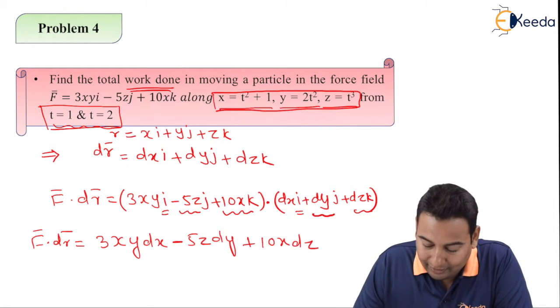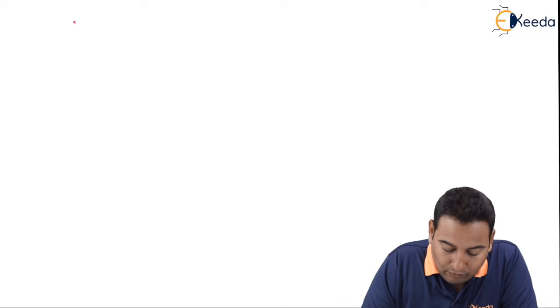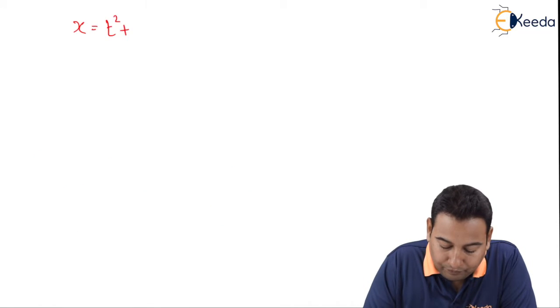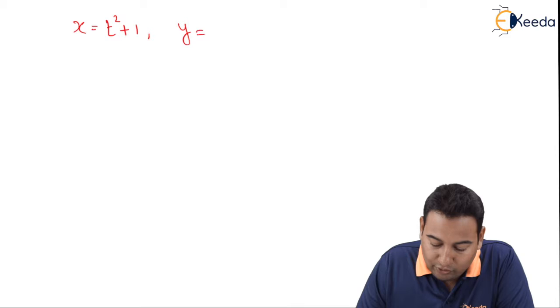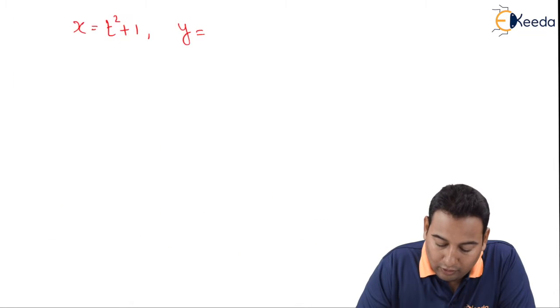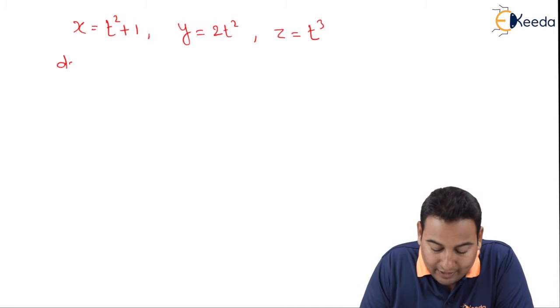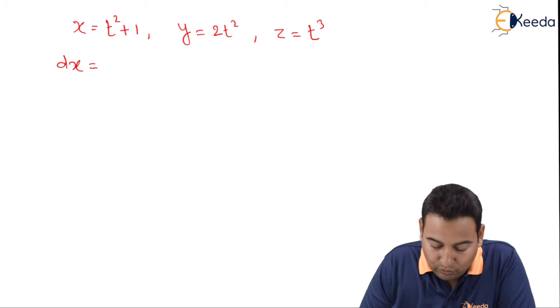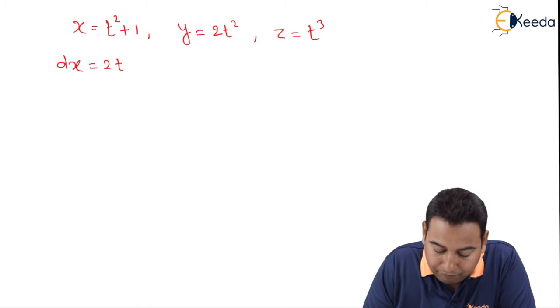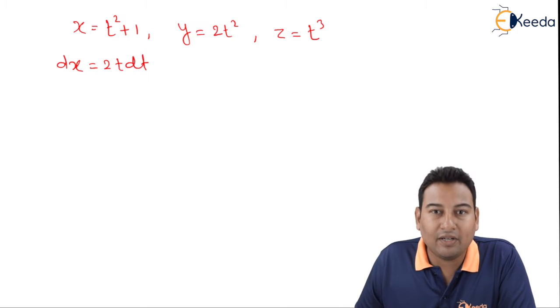Let's first of all convert the problem in terms of t. x equal to t square plus 1, y is equal to 2t square, and z is equal to t cube. First of all let us find dx. What is dx? Differentiate t square, derivative is 2t dt, plus 1 derivative is 0.